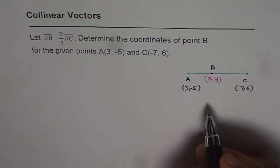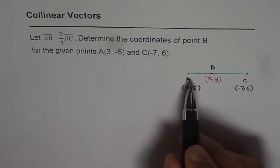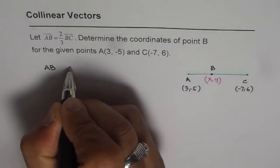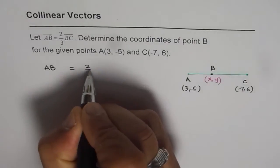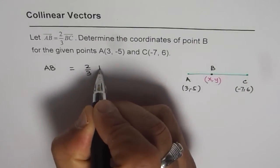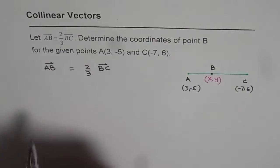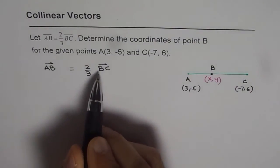So we will use vector algebra to get our answer. Now what is AB? 2 over 3 of BC. So these are directed vector segments. AB equals 2 thirds of BC.